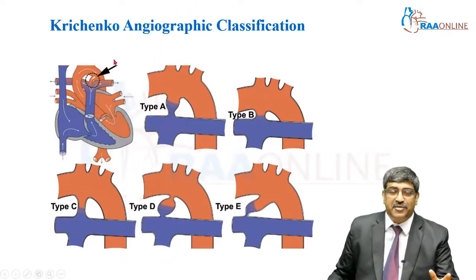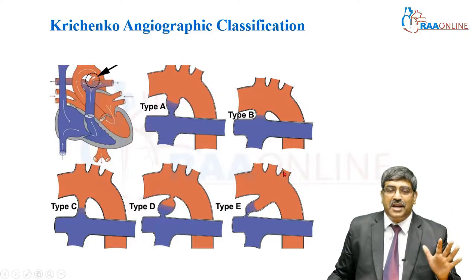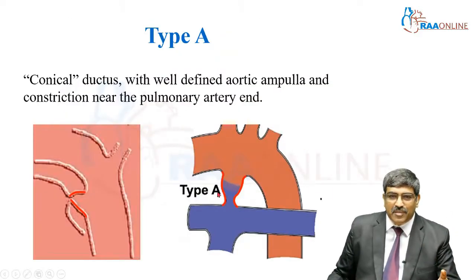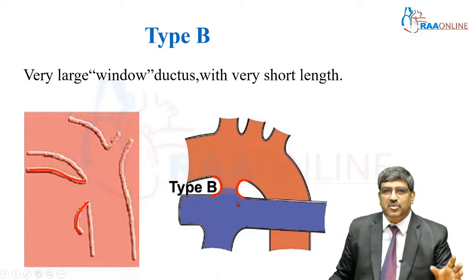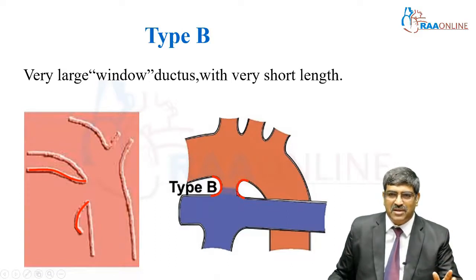Coming to the angiographic classification done by Krichenko, he named 5 types of PDA. Type A is the conical ductus — a well-defined aortic ampulla with constriction at the pulmonary end. Type B is the window ductus, where the ductus is very large but the length is very short.